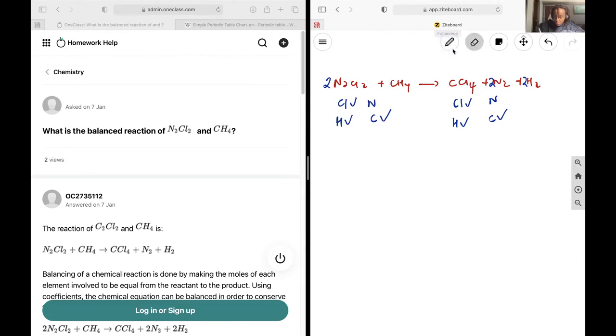if we go ahead and double check everything again, you'll find here I have four nitrogen, four nitrogen, two by two, four chlorine, four chlorine, one carbon, one carbon, four hydrogen, four hydrogen.